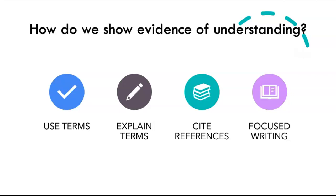You also want to explain these terms. For example, what does a milestone mean? Explain that to show that you understand it. You also want to make sure that you cite your references. The expectation is that you are learning in this course, so it's not expected that you know everything you are writing about — show where you got your information. You cite references even if you paraphrase, which is putting information in your own words, and also if you do direct quotations. You always want to cite your references.